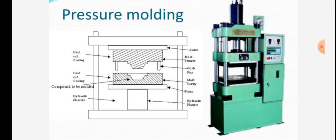Heat and cooling is given in the upper part and lower part of this machine. Compound to be molded, hydraulic pressure on compound to be molded, hydraulic plunger, platen, bolt, cavity, outside pins, mold plunger, and upper platen are given. This is the pressure molding machine.